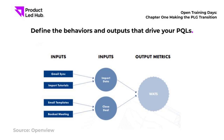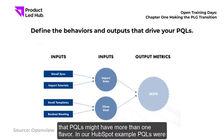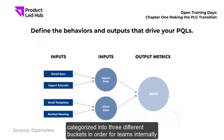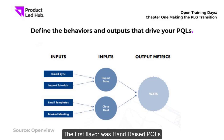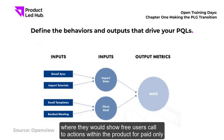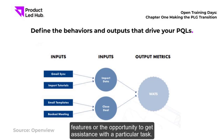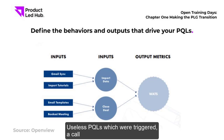Your PQLs might have more than one flavor. In HubSpot's example, PQLs were categorized into three different buckets so teams could find the best opportunities and grow revenue. The first flavor was hand-raised PQLs, where free users were shown calls to action within the product for paid-only features or to get assistance with a particular task.